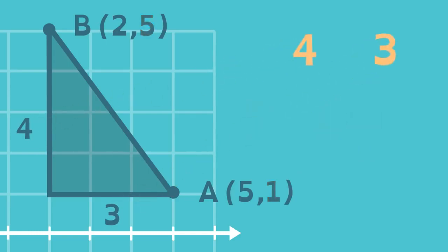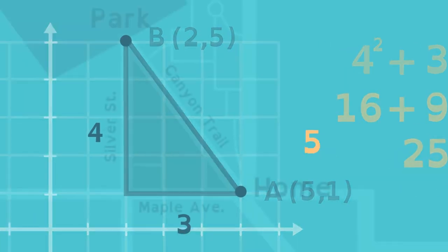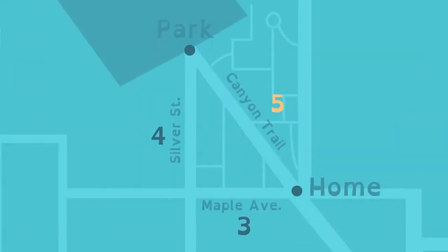Now apply the Pythagorean Theorem. Four squared plus three squared equals sixteen plus nine, which when added together equals twenty-five. That's the same as five squared. Again, the length of Canyon Trail is five miles.